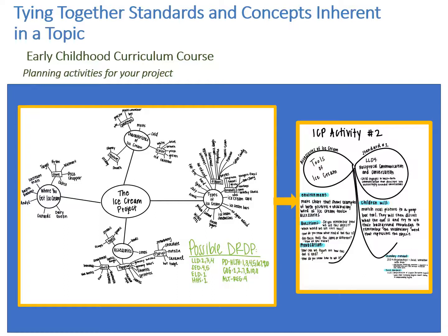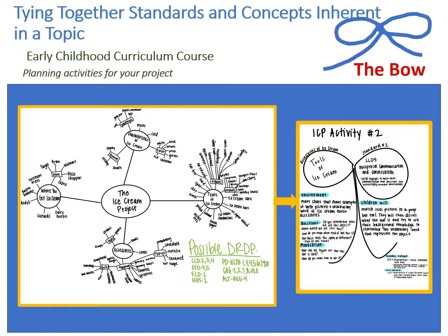The variable between those different curriculum continuum stages would be that as we examine the teacher anticipatory web — on the left-hand side of your screen you should see the ice cream project's anticipatory plan. This was Madison Cronley's plan, who was a student in our program. To the right, you can see what we are going to learn about today: how we tie together concepts inherent to the topic with the standards that children need to learn. That is tying things together with the bow.